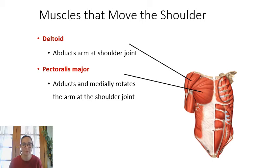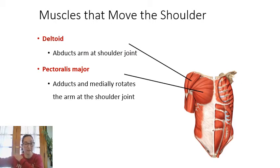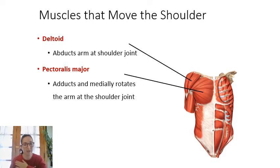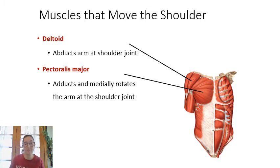The main muscle of the shoulder is the deltoid, which is important for arm abduction — pulling the arm away from the body. Pectoralis major is a chest muscle that inserts on the humerus; it's important for adducting the arm back to the midline and for medially rotating the shoulder — rotating it forward.